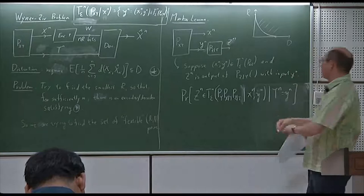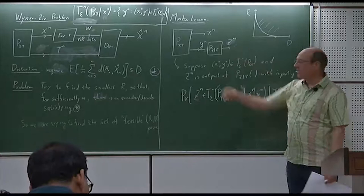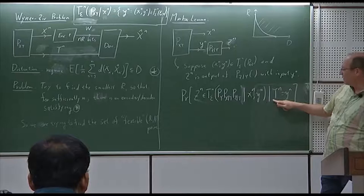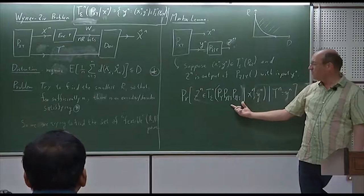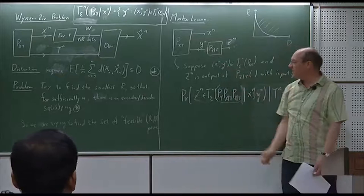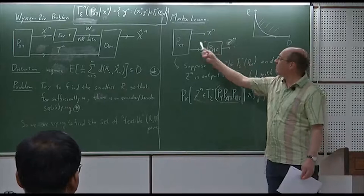What I'm thinking of is this experiment: we've generated two sequences, we check they're typical, we generate z_n randomly from y_n, and the question is what's the probability that z_n will lie inside this typical set conditioned on y_n? Well, if you look at it — the z_n, if we're looking at this — this is exactly the distribution that we're testing for. The test distribution corresponds exactly to our situation.